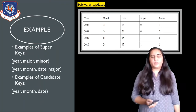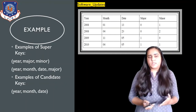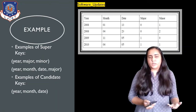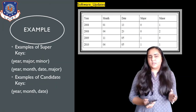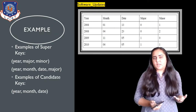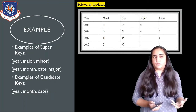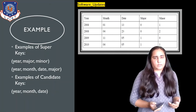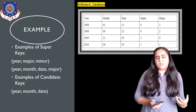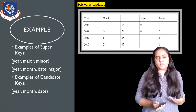Now what are candidate keys? Consider the super key year, month, date, and major. If I remove major, does it still form a unique combination? Looking at the data closely, yes it does — year, month, and date together still form a unique combination. So they are also a type of key, known as a candidate key. A candidate key is formed by taking a super key and removing attributes until only the necessary ones remain — making it minimal.